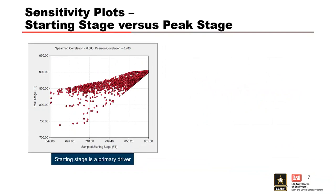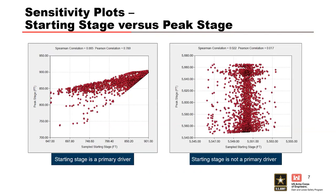The second sensitivity plot is starting stage versus peak stage. On the left, the correlation is relatively high — Spearman of 0.865 and Pearson of 0.78 — which means that the starting stage does influence the peak stage. Higher starting stages generally result in higher peak stages, so if the result is affected by antecedent conditions, you might need to investigate further. For a different dam shown on the right, the correlation is very low — Spearman of 0.022 and Pearson of 0.017 — meaning the starting stage doesn't really affect the peak. These correlation plots provide valuable insight on the impact of different variables on the resulting stage frequency curve.